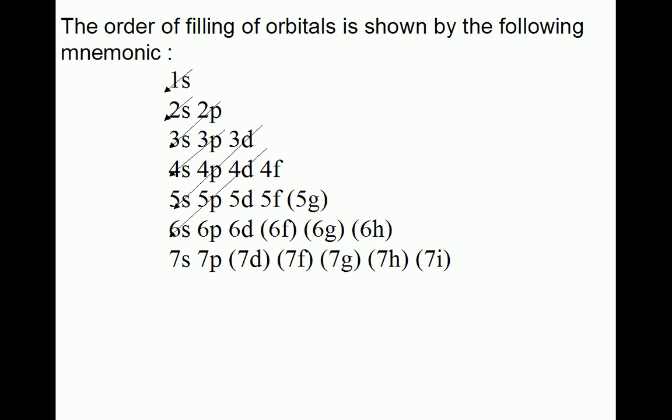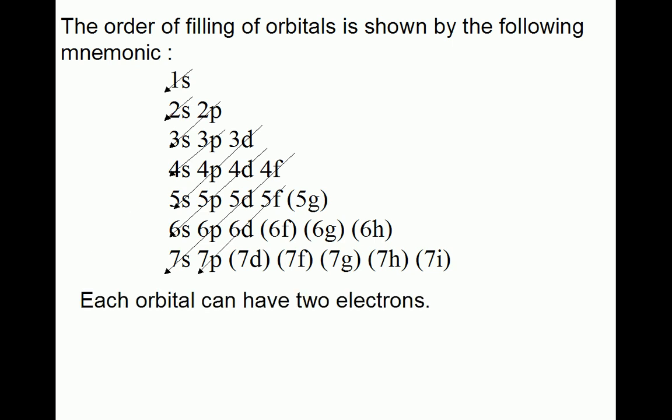Continuing: 5p, 6s, 4f, 5d, 6p, 7s, 5f, 6d, 7p. Each orbital can have 2 electrons.